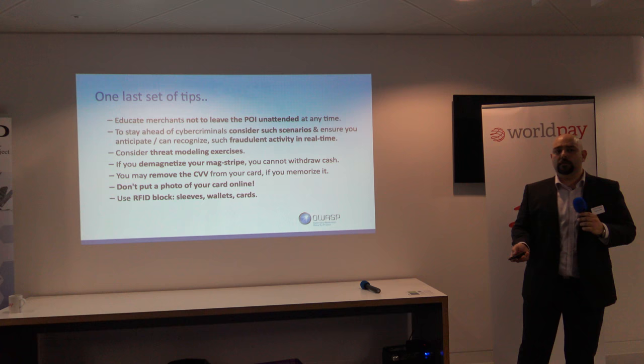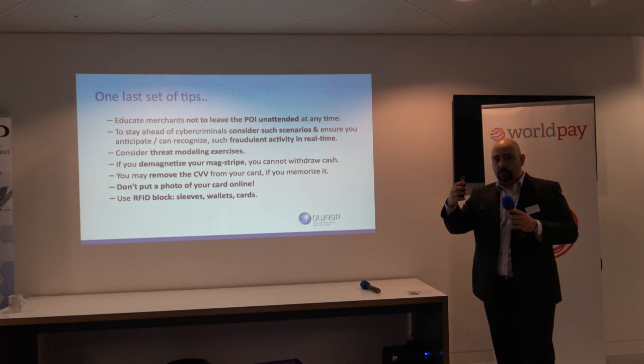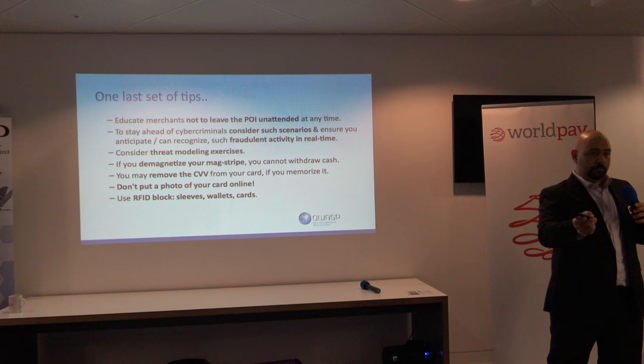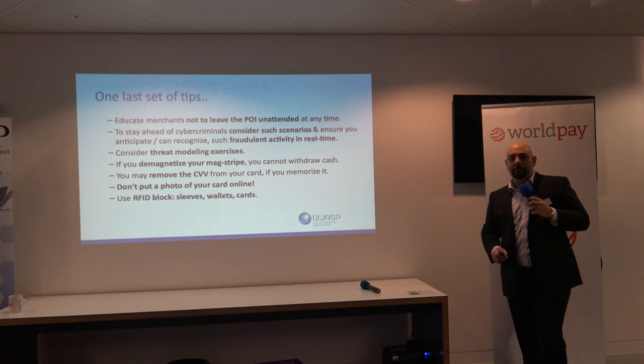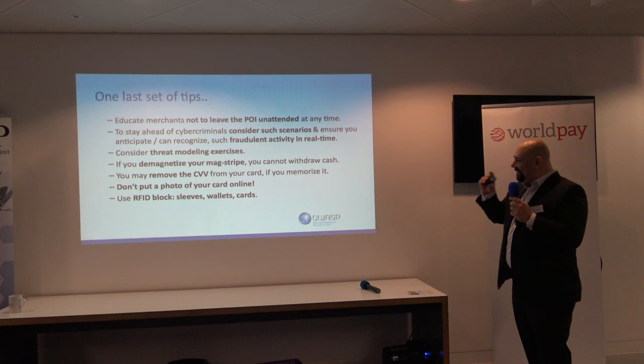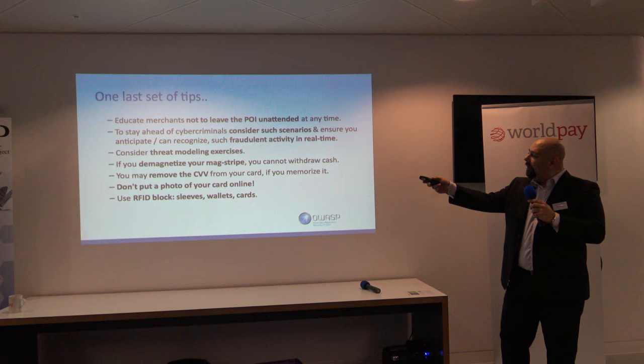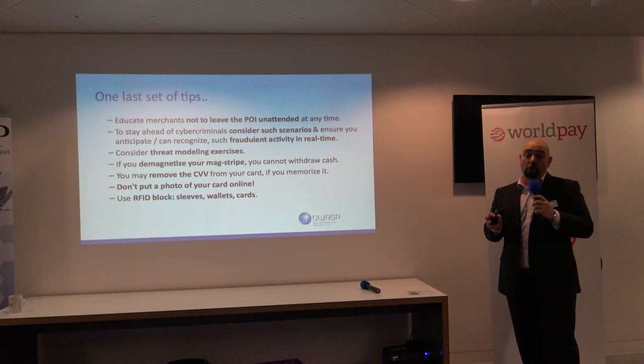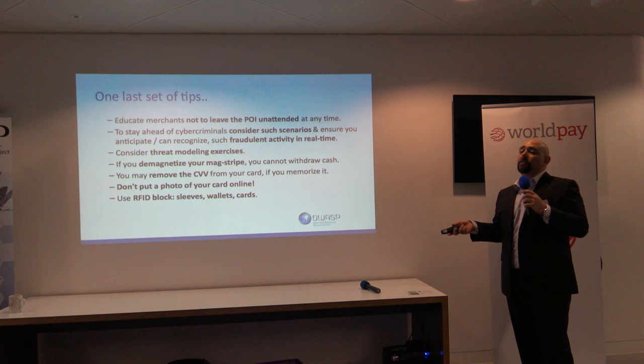Consider threat modeling exercises from different perspectives. If you want to be very secure with your debit card, you can demagnetize your mag stripe — it won't work in an ATM, but there's no fallback. If you can remember your CVV — the little number on the back — and you scrape it off, that's security through obscurity but it works, because you're hiding a very important piece of information.